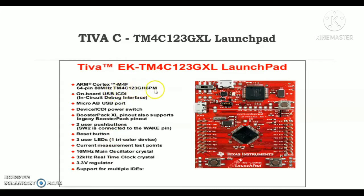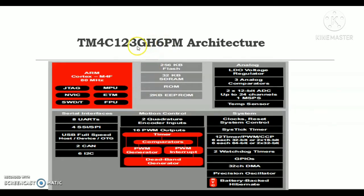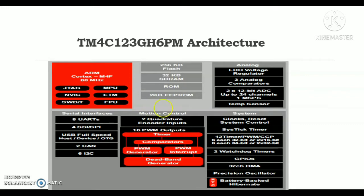The architecture of this Cortex M4 is divided into six sections. One section contains the JTAG, MPU, and FPU. Another is the memory part. There is a section dealing with the analog part. The system section contains the oscillator, clock, timers, and GPIOs. Motion control is a very important advanced feature, supporting two quadrature encoder inputs and PWM pins, which can control motors and panels.